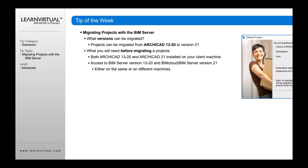What you will need before migrating a project: you're going to need both the older version — ARCHICAD 13 to 20, whatever the current version you're using — plus the most recent version you're migrating to. So if you're on version 20, you need to make sure that version 20 is installed and ARCHICAD 21 is also installed on the client machine. You also need access to the BIM server for the older version and the most recent version of the BIM server — in this case, version 21.